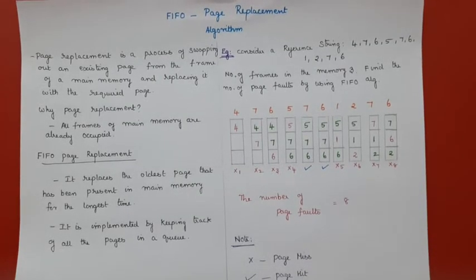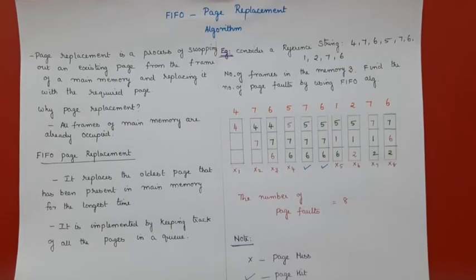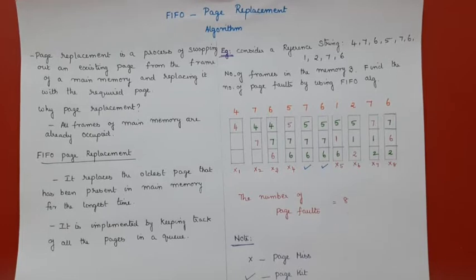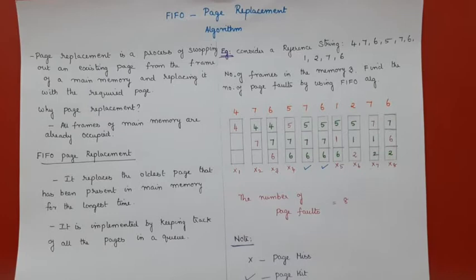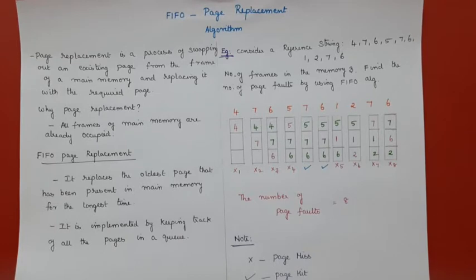In this video we are going to see about page replacement and one of the page replacement algorithms. In case of main memory, main memory is a set of free frames. When a page comes in, we'll be allocating it into one of the free frames available. If no more free frames are available, we will swap out a page from one of the frames and swap in the required page.